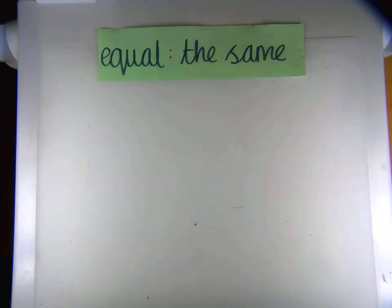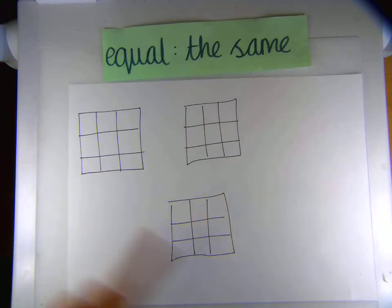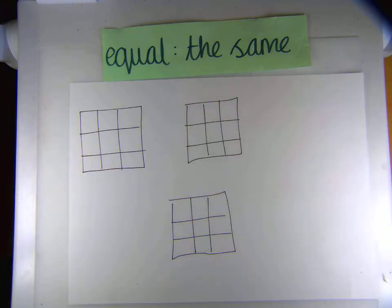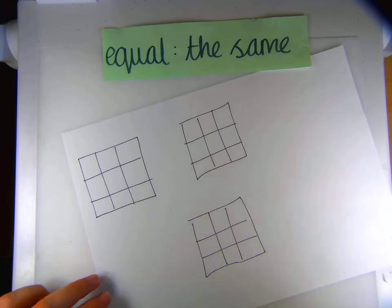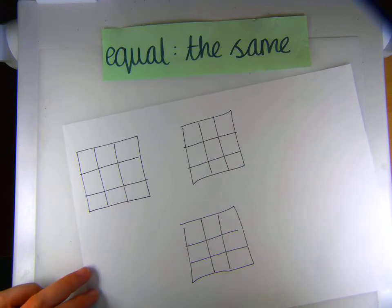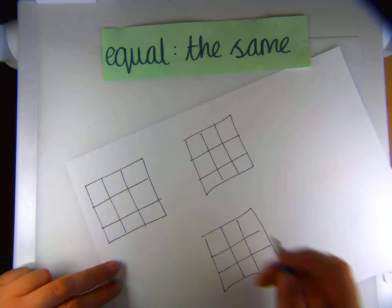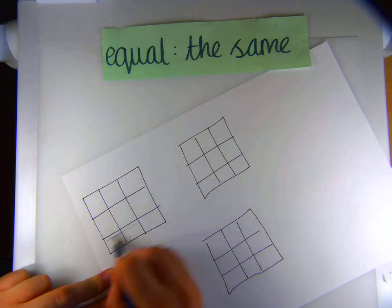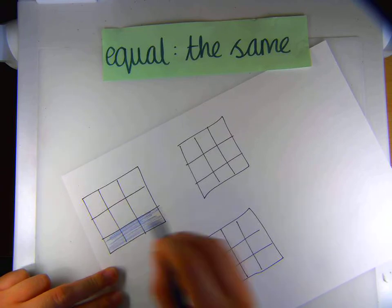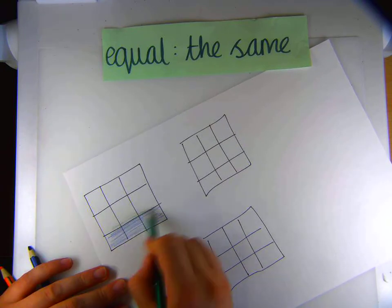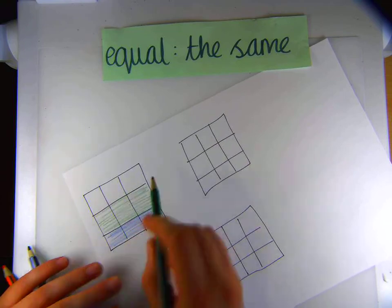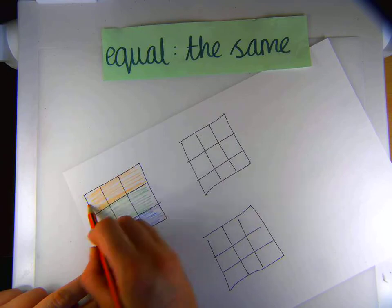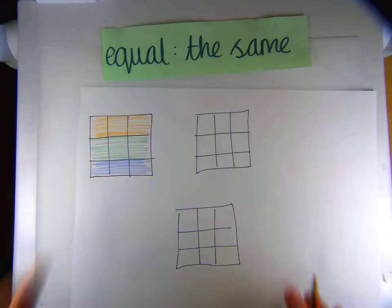We can also do this with pictures of grids. Now this grid has got nine parts to it, and I'm first of all going to try and split this group into equal parts. So I could do a group of three, a group of three and another group of three. Now my different colours clearly show my different groups.